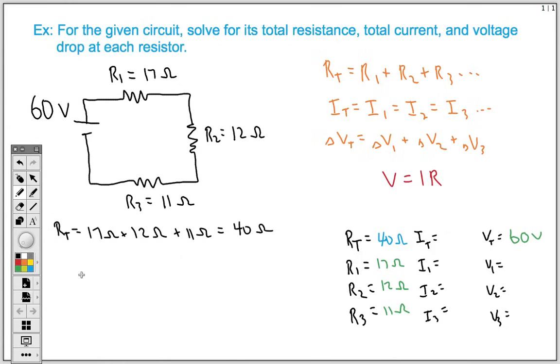So our voltage here is 60 volts. That's going to equal our current times our resistance, which is 40 ohms. So to get I by itself, we're going to divide by 40 on both sides. When we do this, our total current is going to equal 1.5 amps. This is valuable information. We can plug that in right here, 1.5 amps.